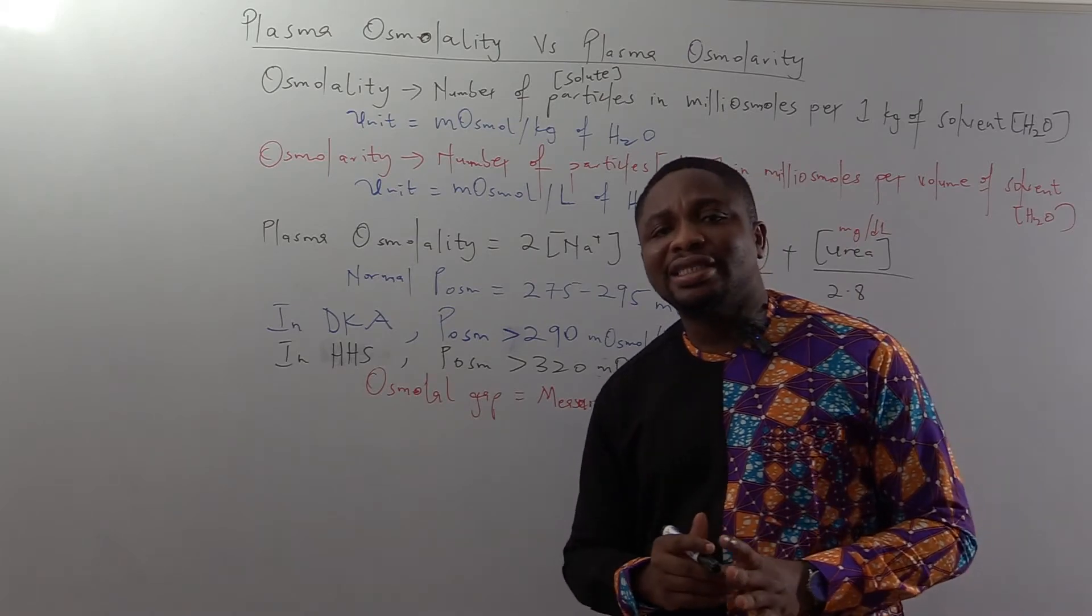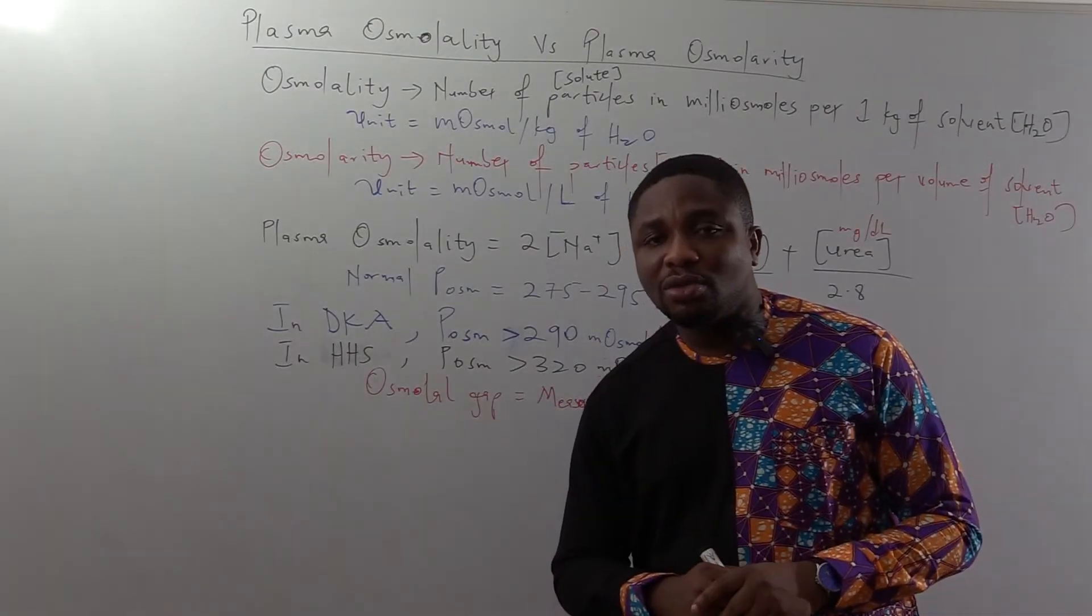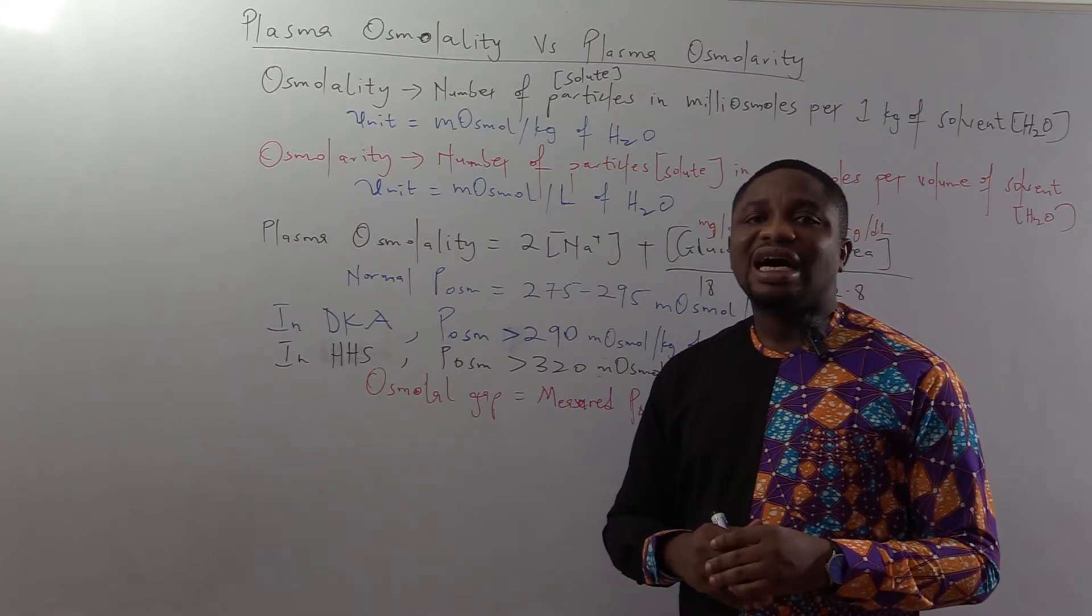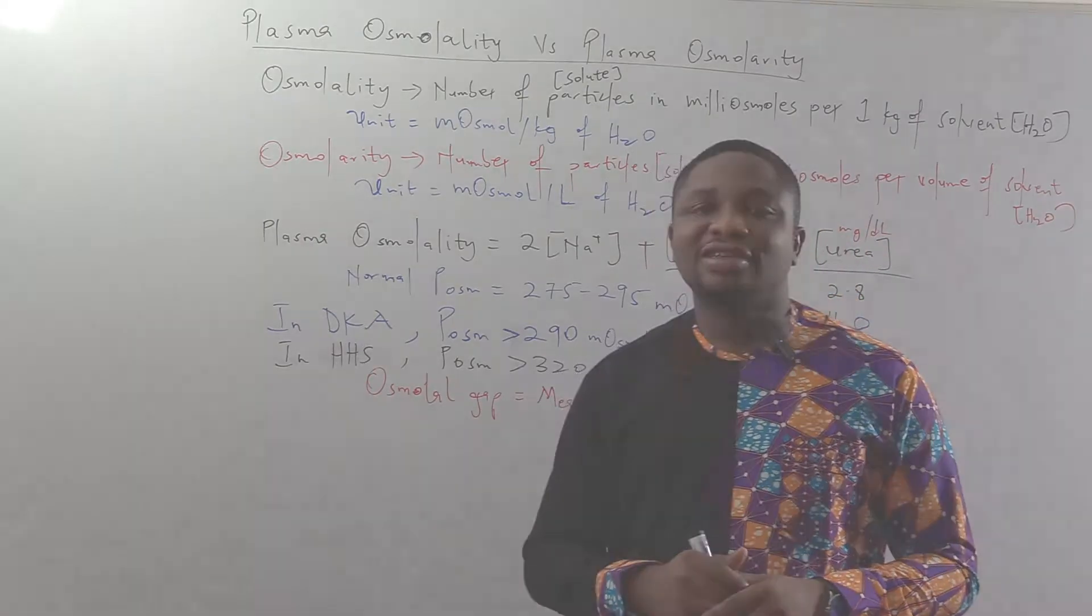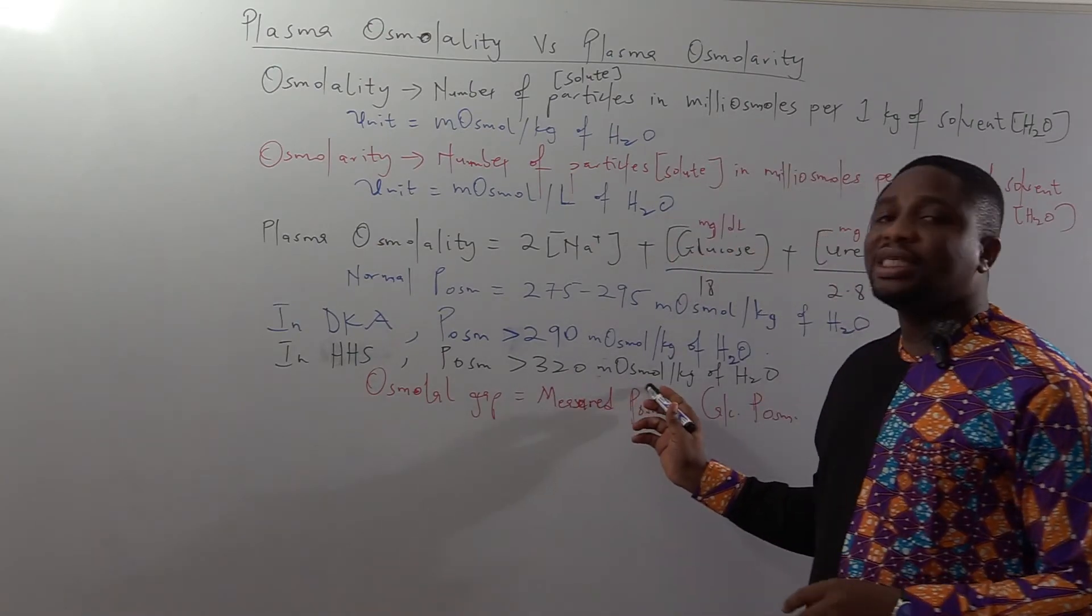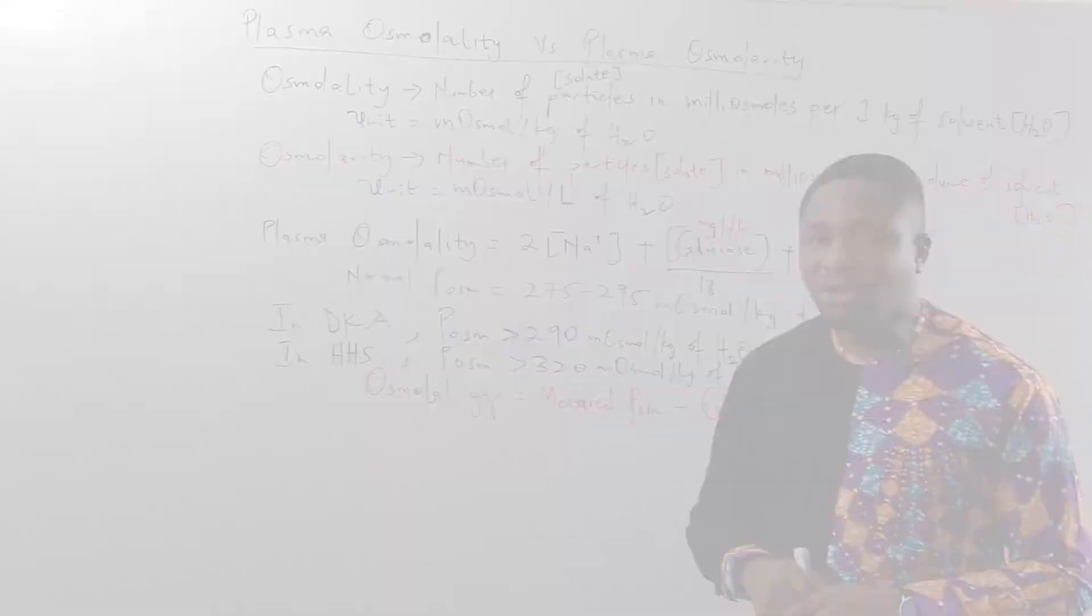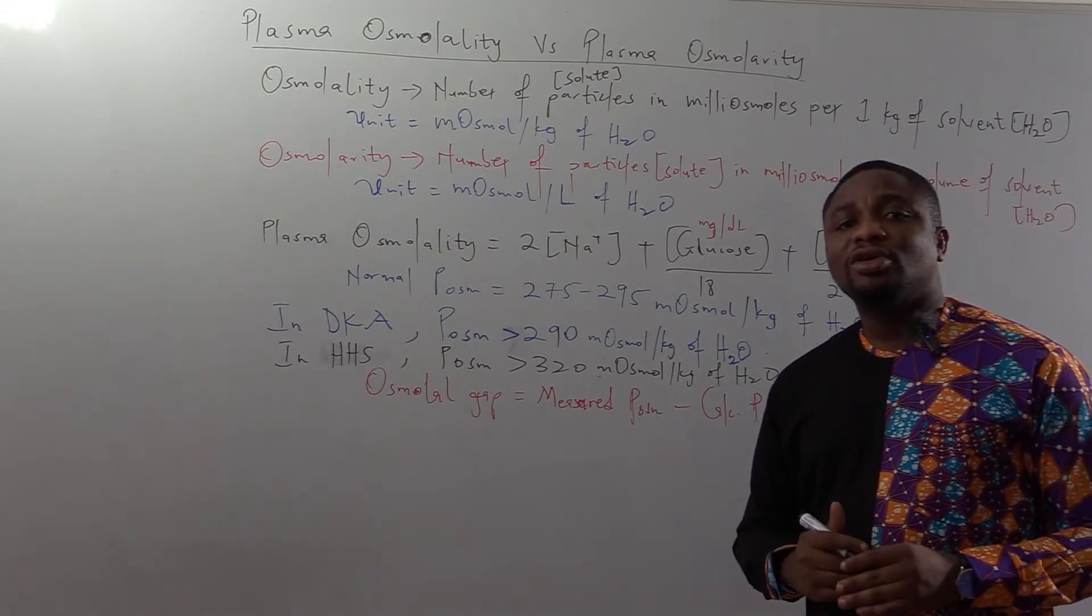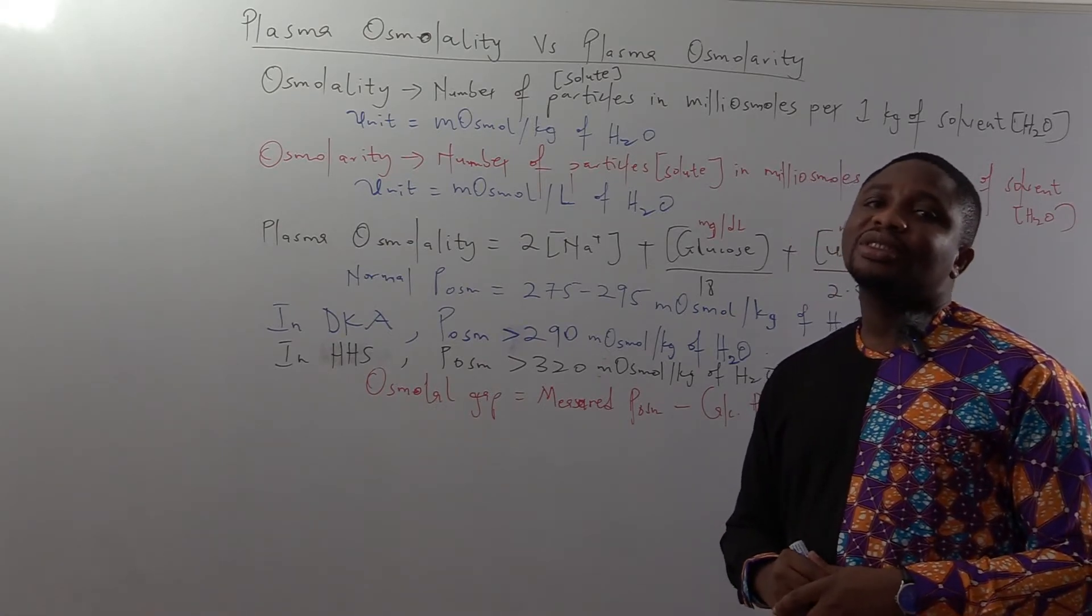the plasma osmolality is usually greater than 290 milliosmoles per kilogram of water. While in hyperosmolar hyperglycemic state, the plasma osmolality is usually greater than 320 milliosmoles per kilogram of water. For HHS, the plasma osmolality is greater than that of diabetic ketoacidosis.